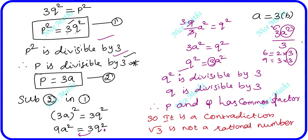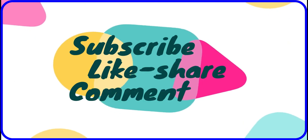Therefore, root 3 is an irrational number. This completes the proof.